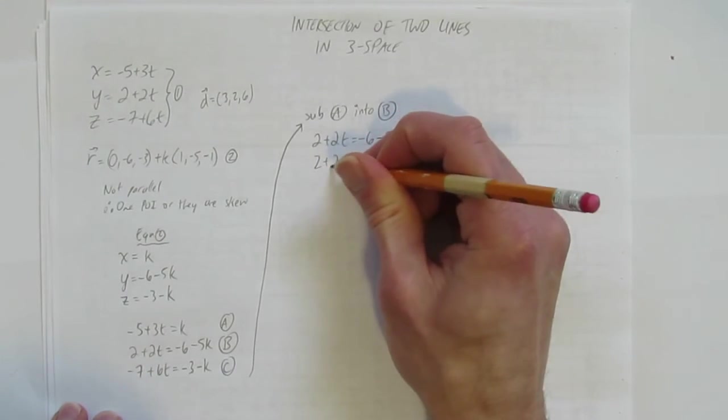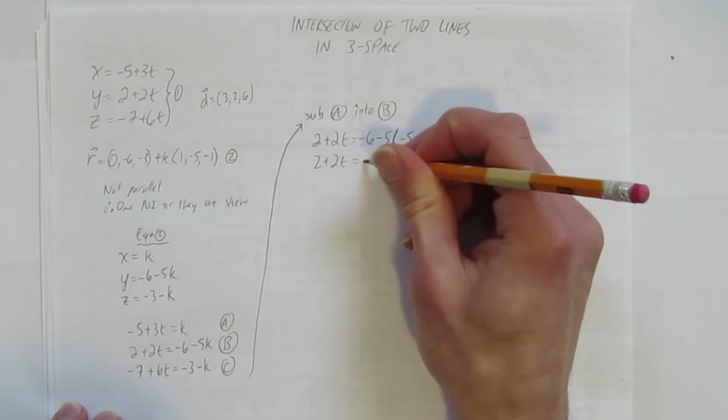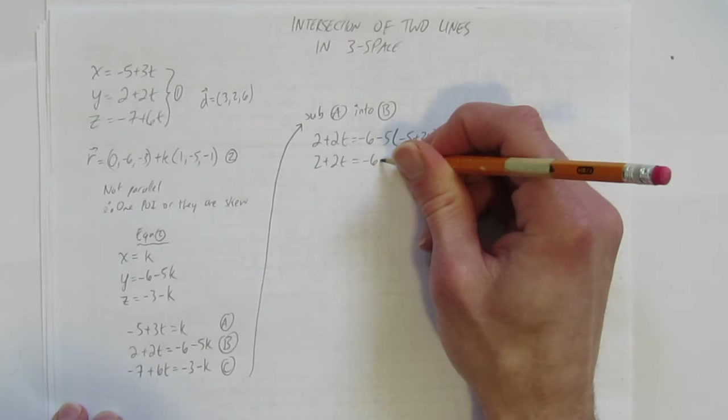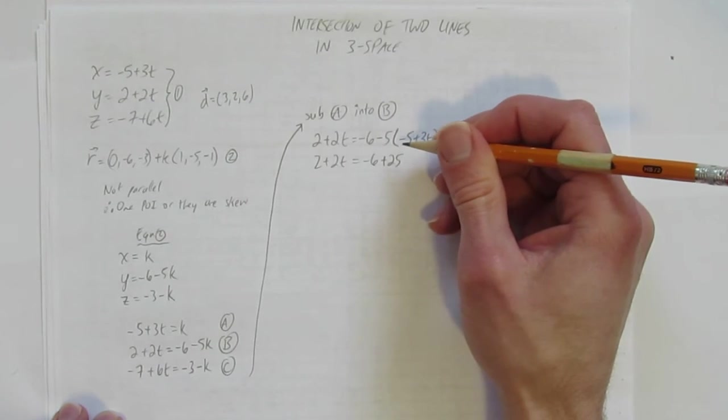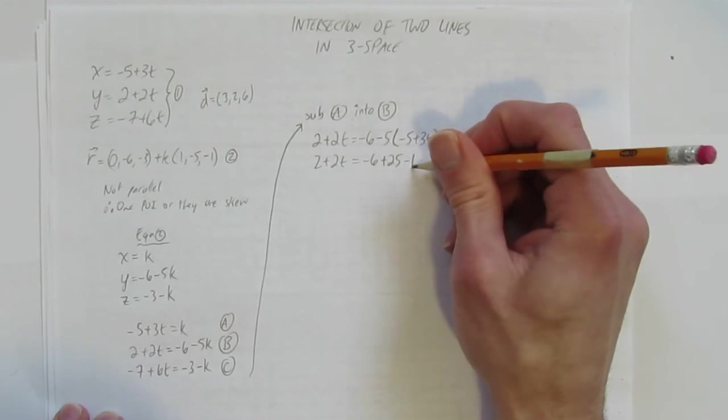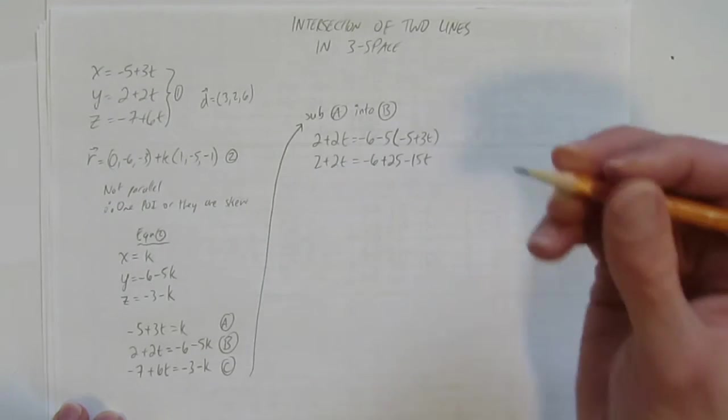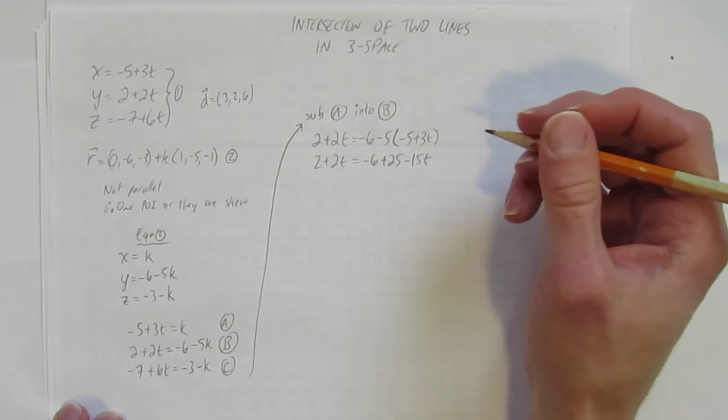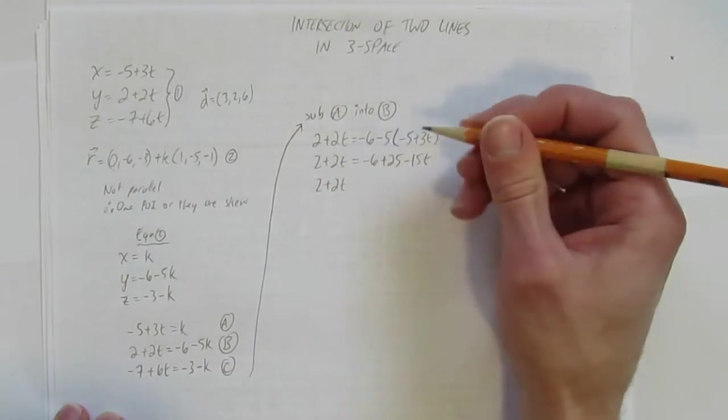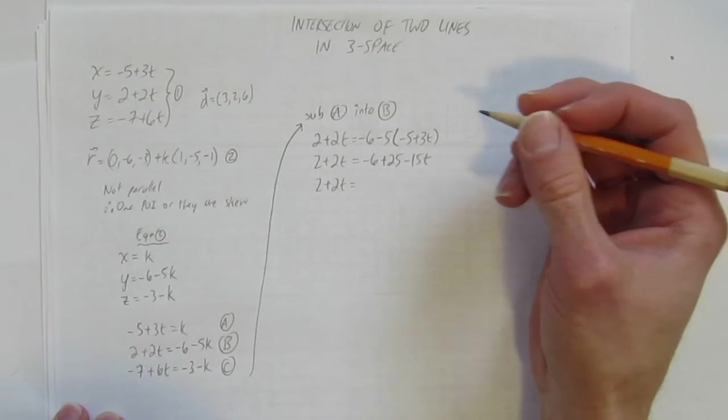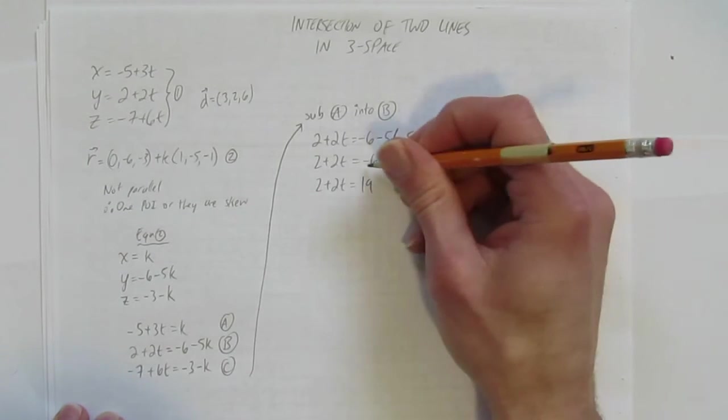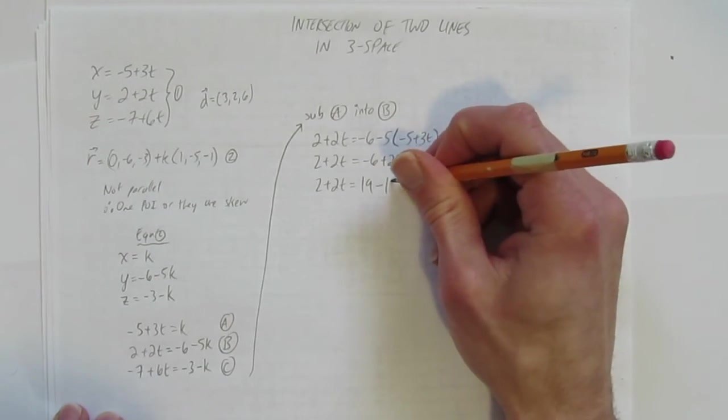Okay, now we're just going to use our algebra skills. This is still 2 plus 2t is negative 6, and we'll distribute this minus 5 in. Minus 5 times minus 5 is plus 25. And minus 5 times 3 is negative 15, so negative 15t. And so we get, let's see, we've got, I guess the next thing, best thing to do would be collect like terms. There's lots of ways to go. But let's collect like terms and you get 19. I got that from negative 6 plus 25. By collecting these like terms, same side, minus 15t.